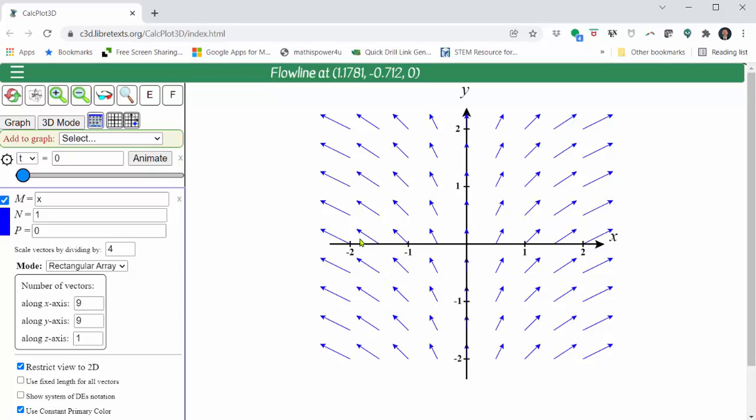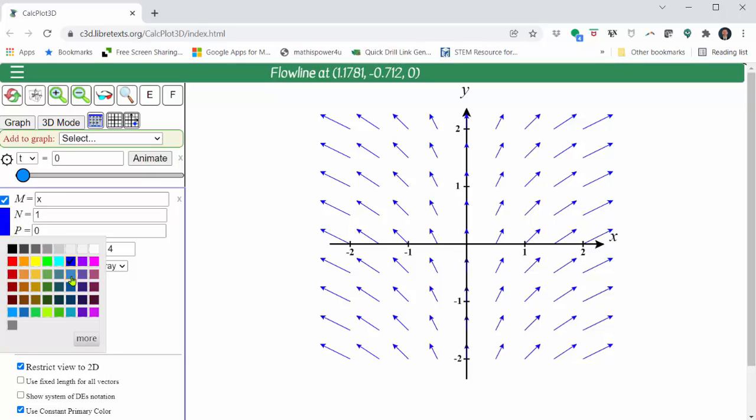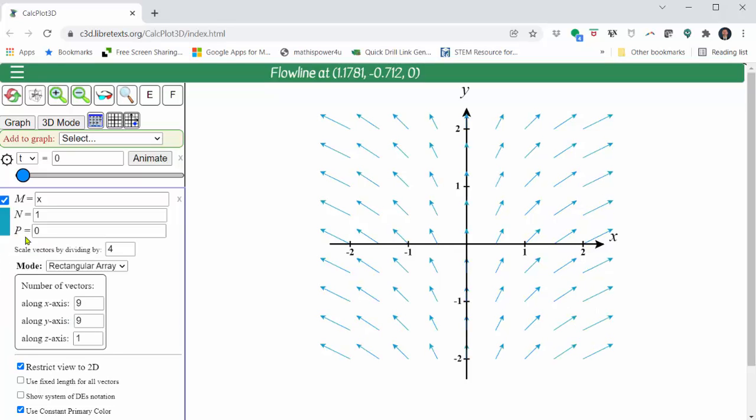If you do want to change the color of the vectors, you can click on the bar next to the n and p and select a different color. And again, if we click on the vector field, we can see the flow line from a particular point.